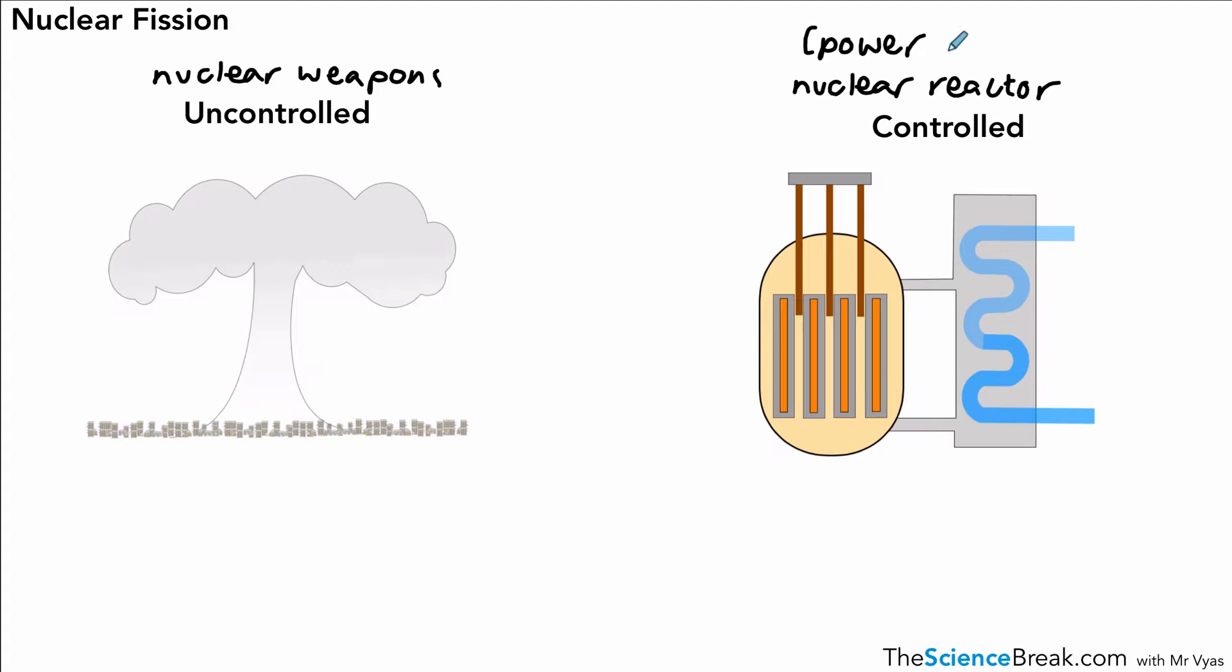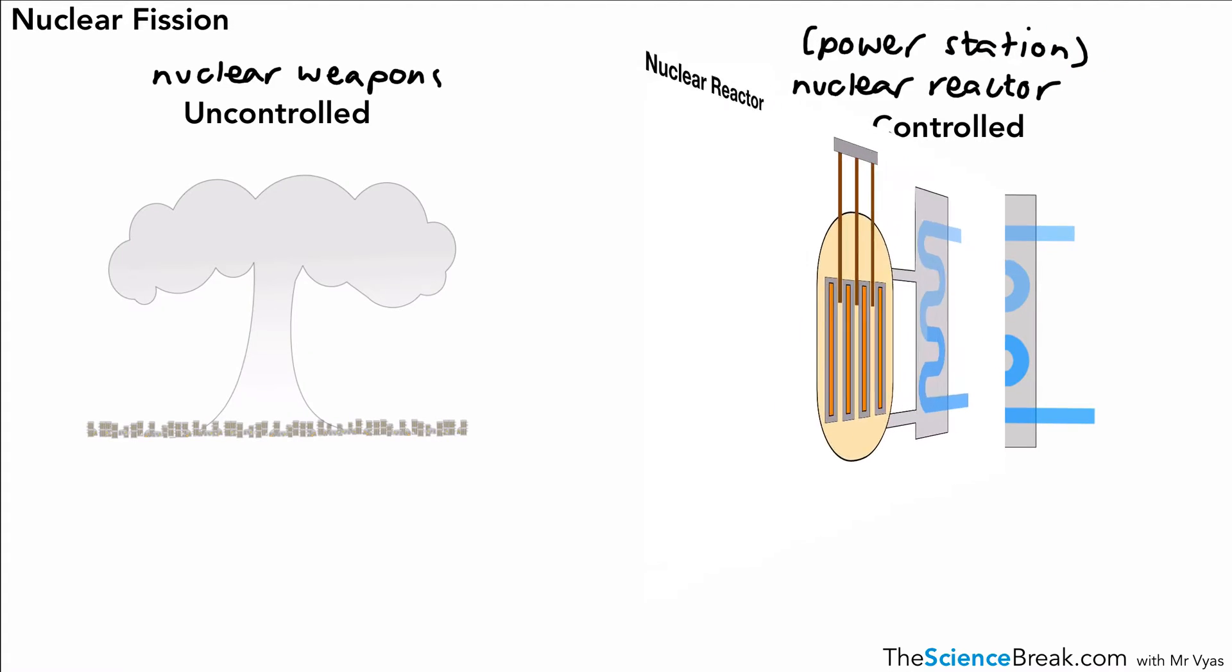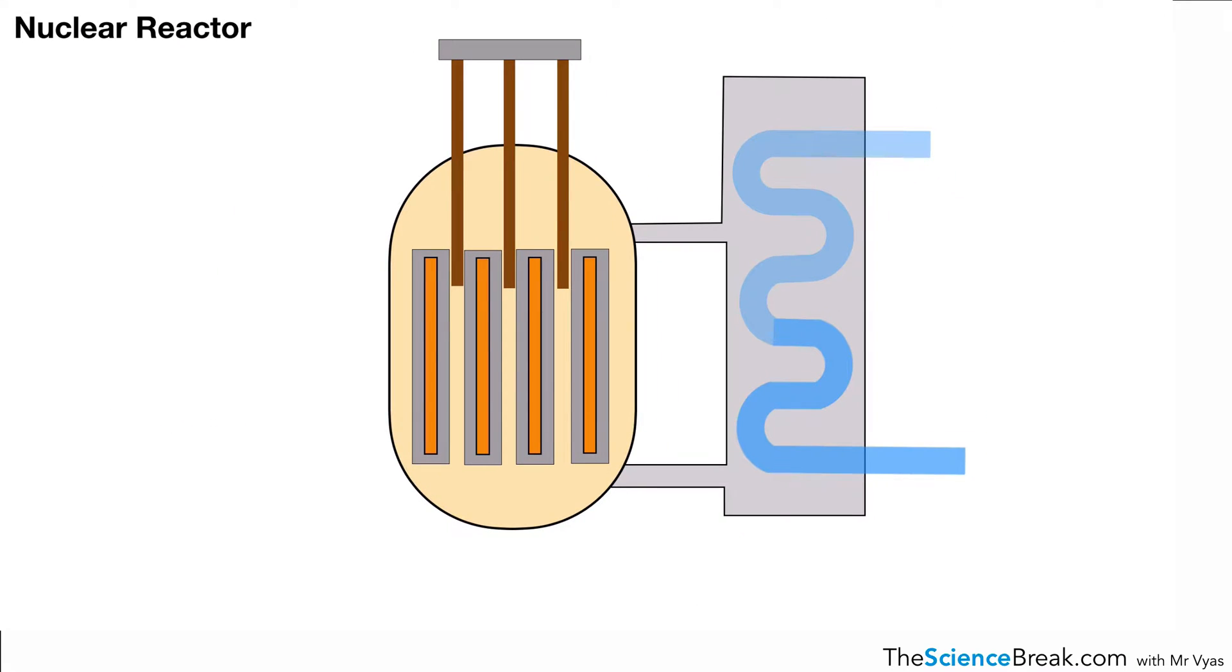We can also have a controlled reaction, and that's actually carried out in a nuclear reactor in a power station. This is where we have a controlled nuclear fission reaction, and this is used to generate electricity. Let's take a brief look at how that works. Here we have our nuclear reactor in that creamy olive orange color. Inside there, we have the fuel rods which are made of uranium, and that's where the fission reaction happens to release all that energy.